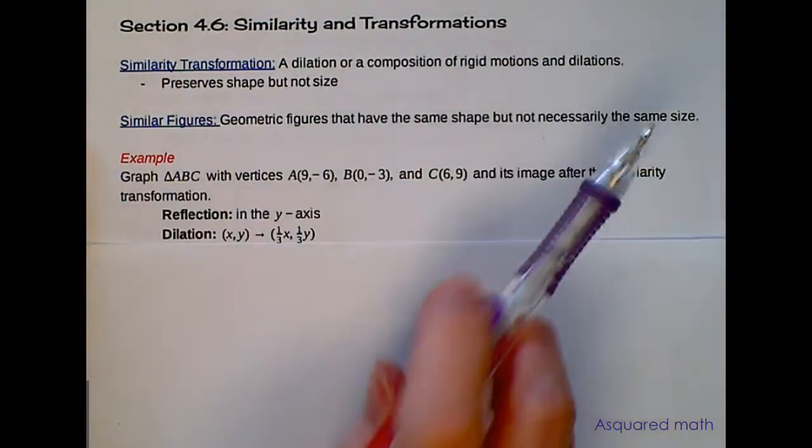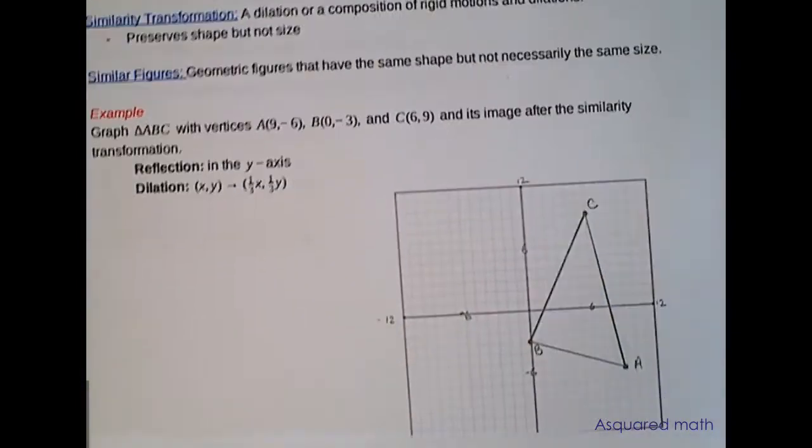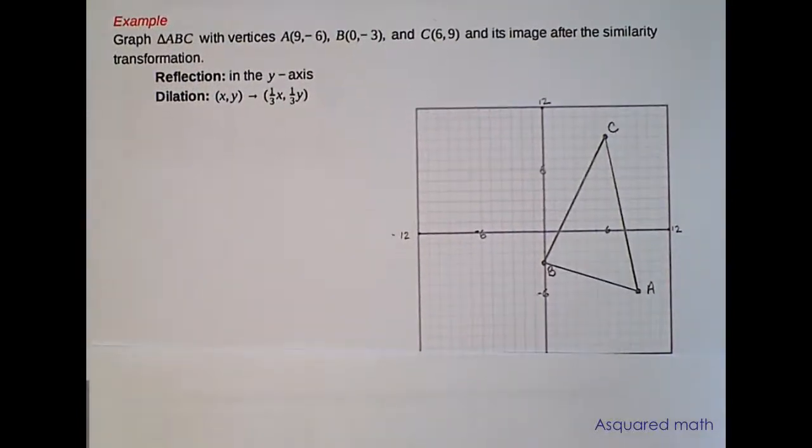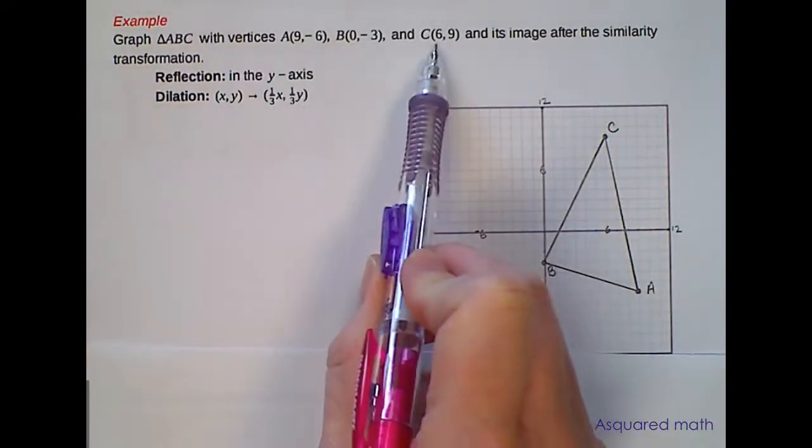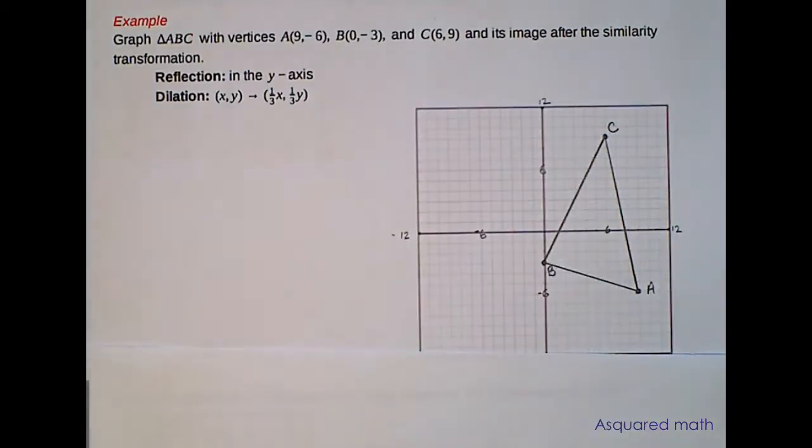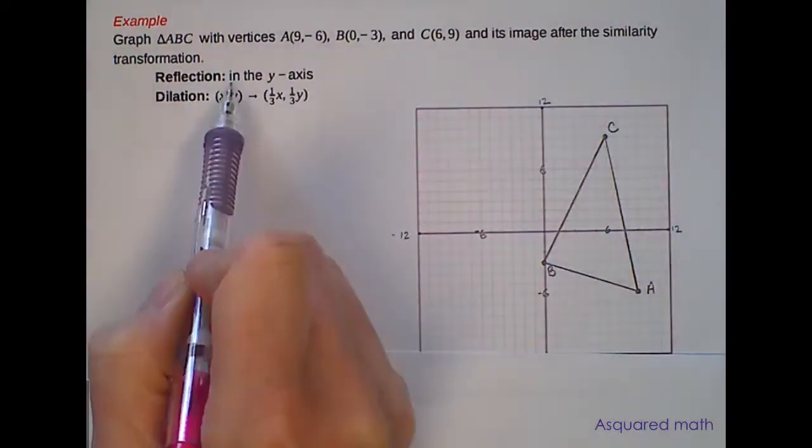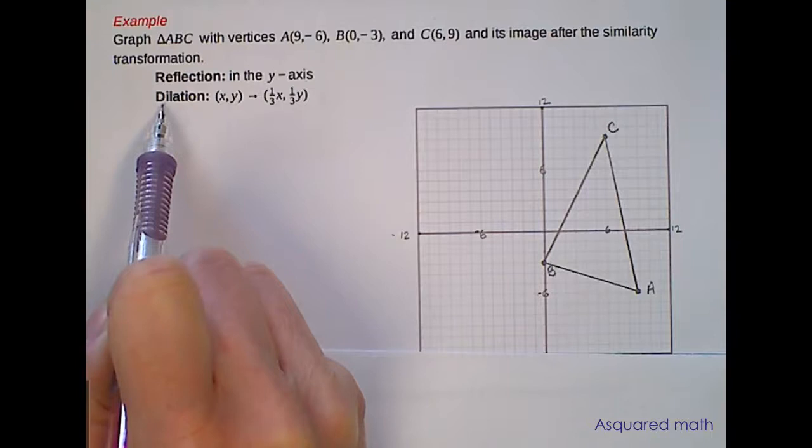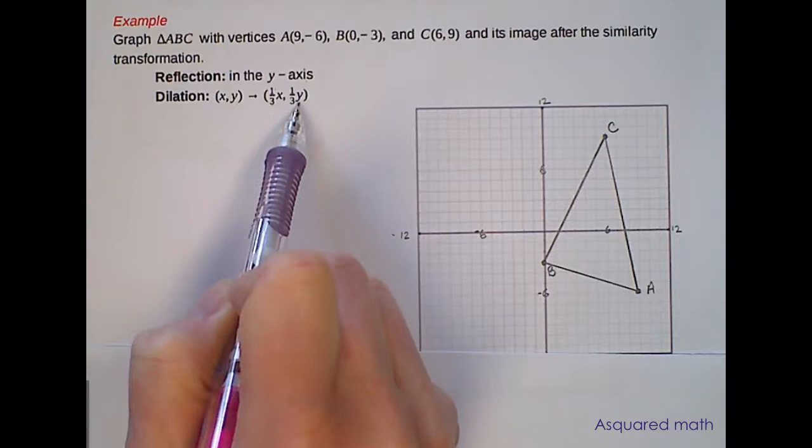So let's do an example. I already drew out the triangle that it's talking about for us but the example says to graph triangle ABC with vertices of A is (9, -6), B is (0, -3), and C is (6, 9) and its image after the similarity transformation. So first we want to do this reflection on the y-axis and then second we want to do the dilation where we take one-third the value of the given x and one-third the value of the given y.